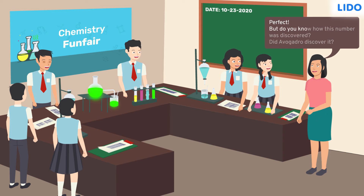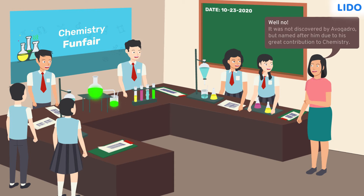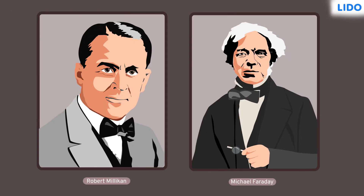'But do you know how this number was discovered? Did Avogadro discover it?' Rina ma'am continued, 'Well, no! It was not discovered by Avogadro, but named after him due to his great contribution to chemistry. Millikan and Faraday's experiments gave one of the most accurate numbers.'